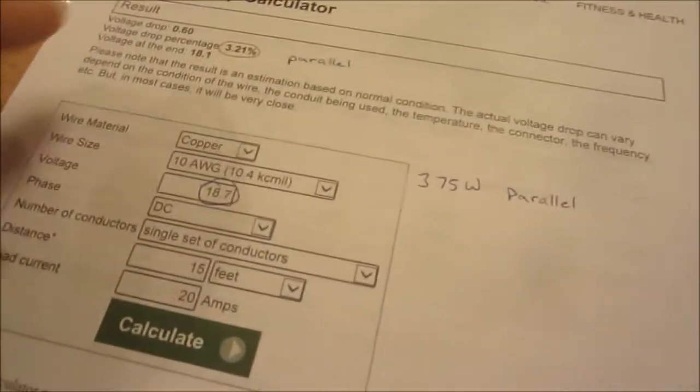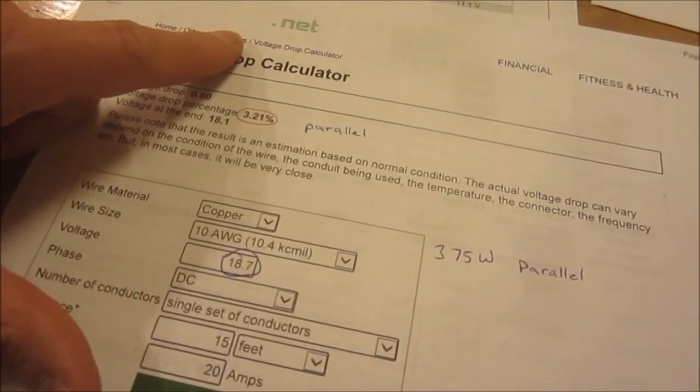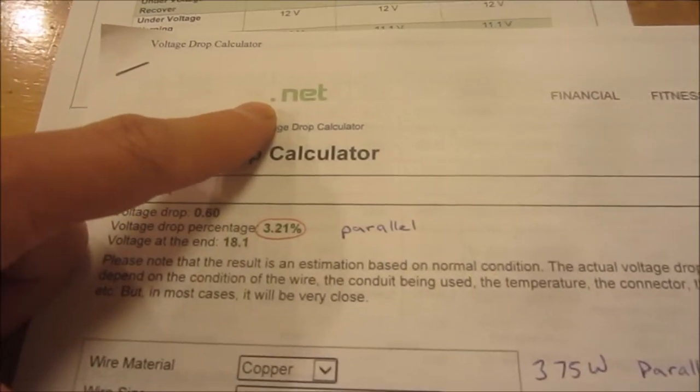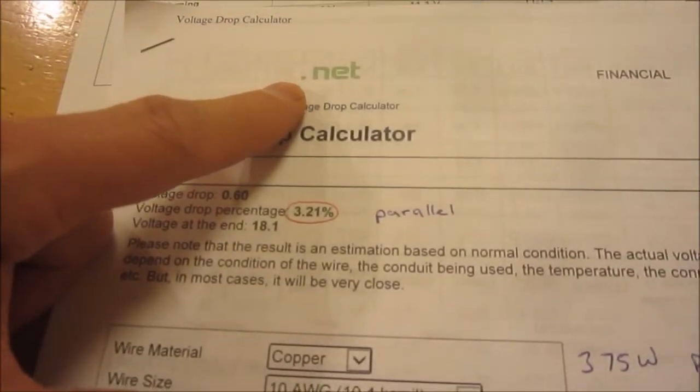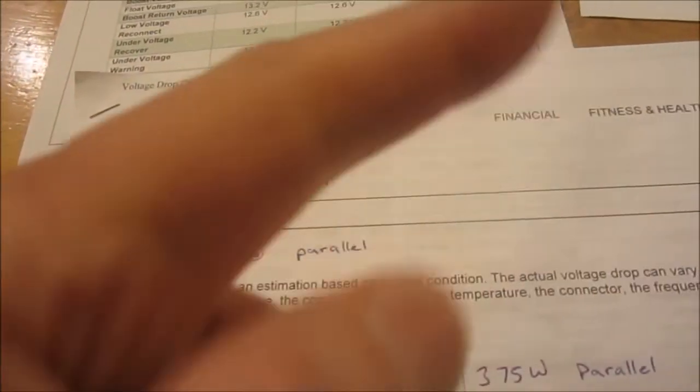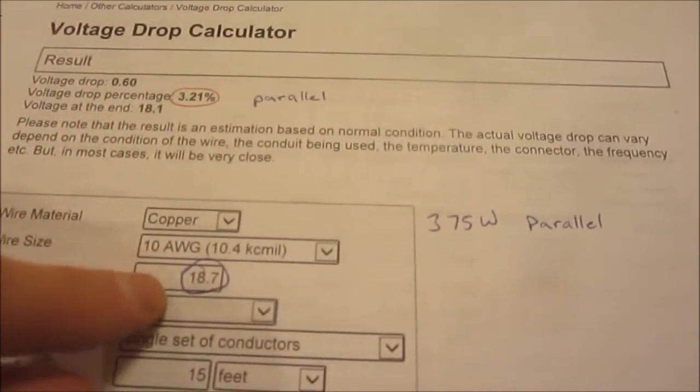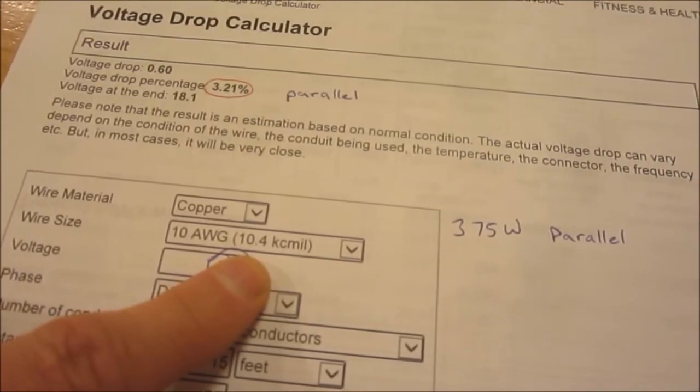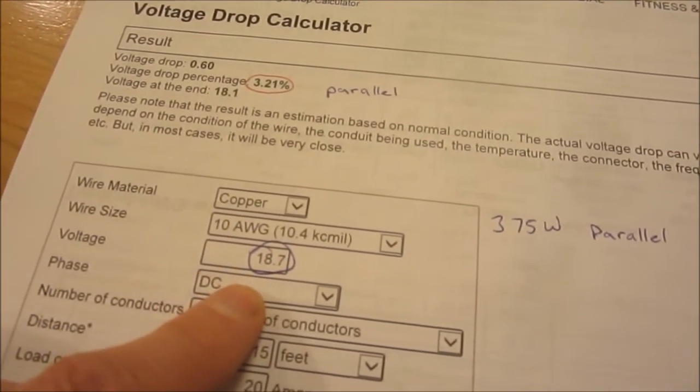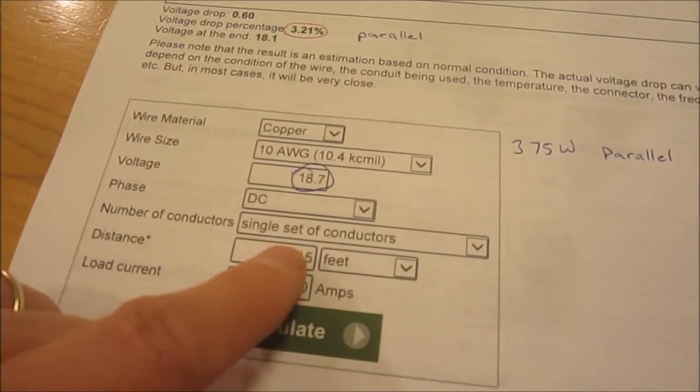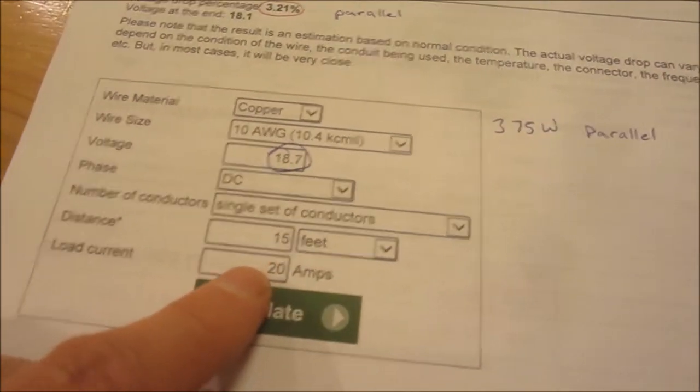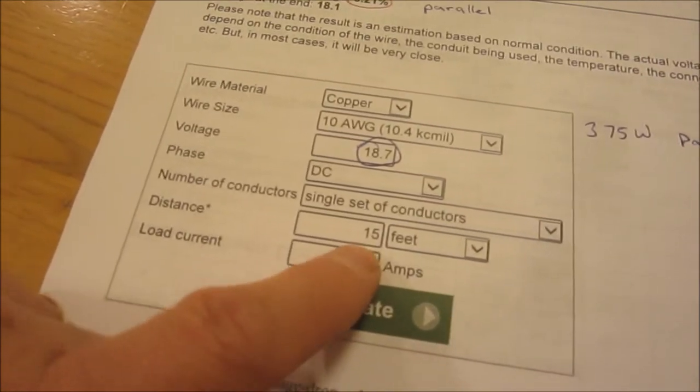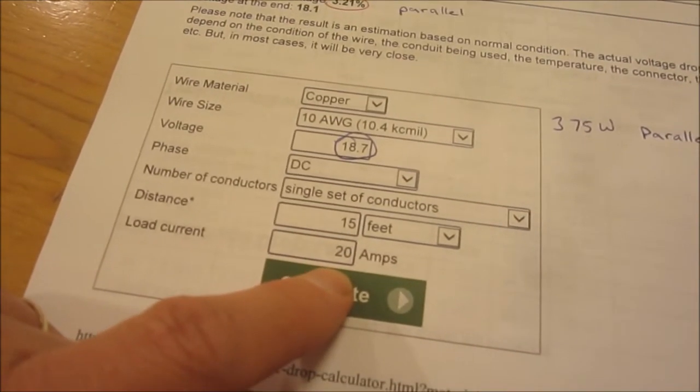And this is calculator.net. I'm going to include a link for that in a panel up above or on the top right about here. Click on that, it will also be in the description. On this I'm able to select my wire size, what my voltage is from the panel, DC wire single set of conductors, and the distance. So I selected my 15 feet and my 20 amps.